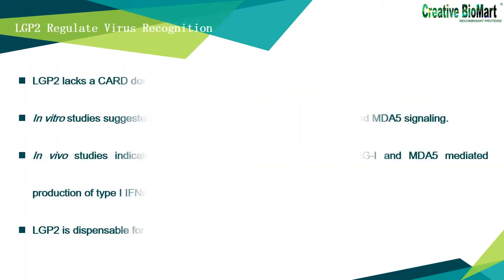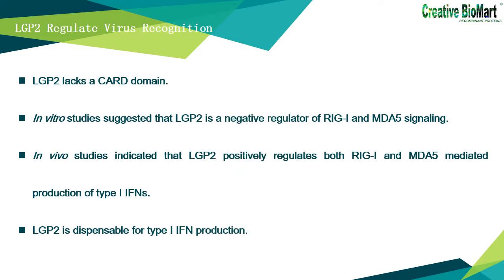The other RLR family member, LGP2, lacks a CARD domain. In vitro studies suggested that LGP2 is a negative regulator of RIG-I and MDA5 signaling, and can sequester dsRNA and inhibit RIG-I conformational changes. However, in vivo studies of LGP2 knockout mice indicated that LGP2 positively regulates both RIG-I and MDA5-mediated type 1 interferon production. Nevertheless, LGP2 is dispensable for type 1 interferon production after stimulation by synthetic RNAs.